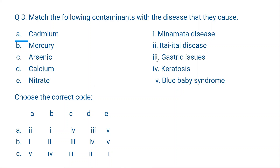Calcium causes gastric issues — when calcium levels in water are high, hardness increases, causing stomach pain and digestive problems. Nitrate causes blue baby syndrome. When nitrate-contaminated water is drunk by babies, the blood loses its oxygen-carrying capacity. There is a reduction in the level of oxygen in the baby's blood, and due to reduced oxygen, the body of the baby turns blue — called blue baby syndrome.